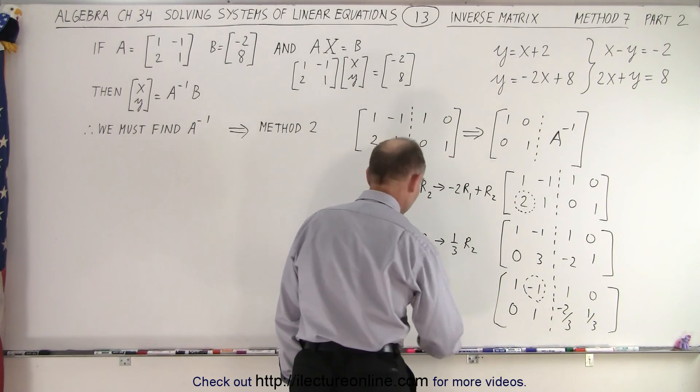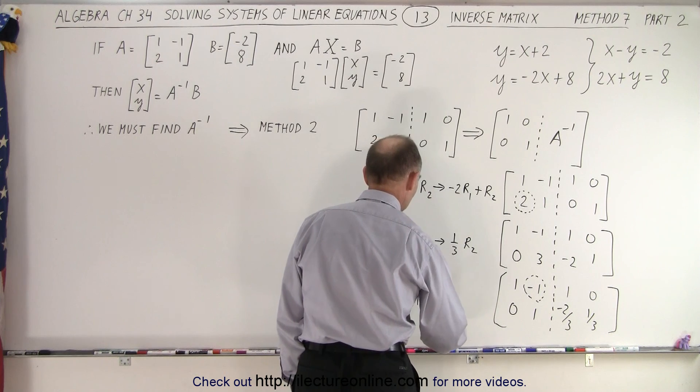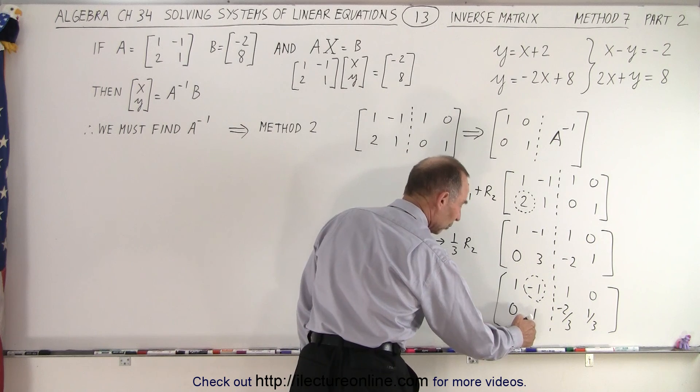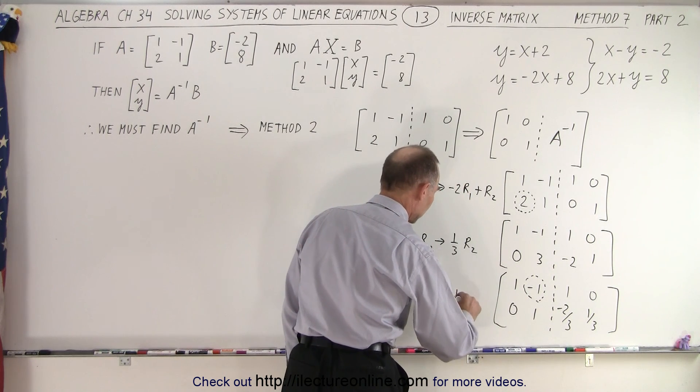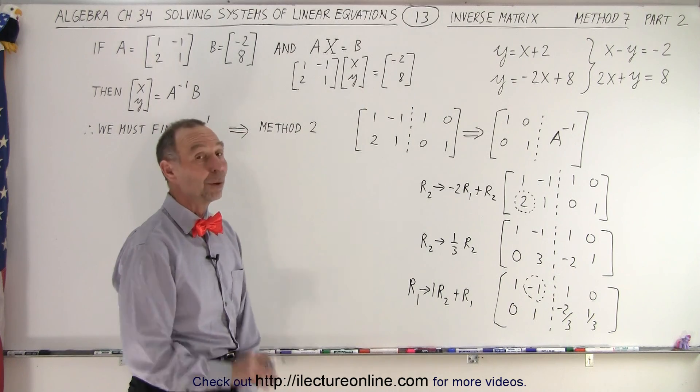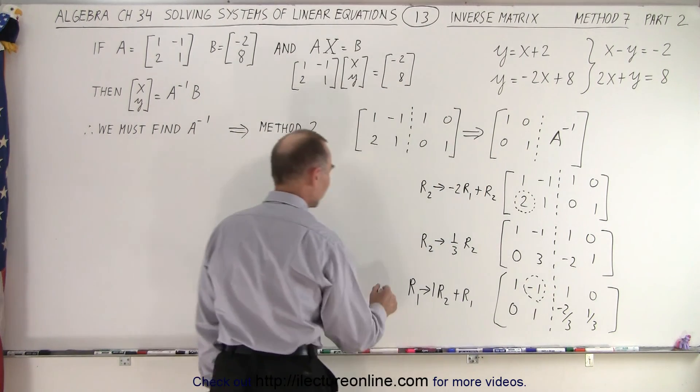So the next thing I'm going to do is I'm going to take row number 1 and replace it by the negative of that number, which is a positive 1, times row 2 and add it to row 1. When we do that, we should turn the negative 1 into a 0.